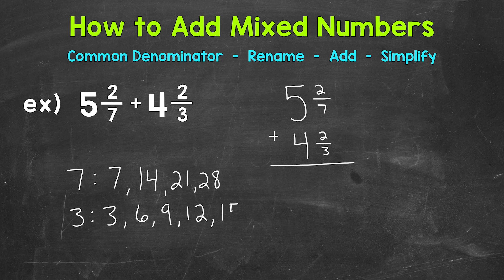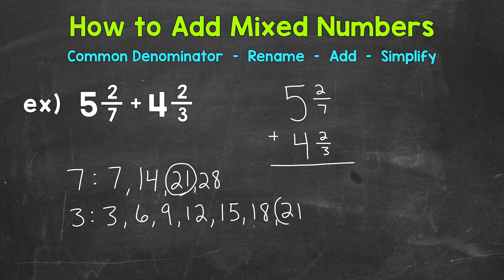So then we have 15, 18, still nothing in common, and then we have 21. So 21 is going to be our least common multiple, and therefore, our least common denominator. So that's what we're going to use.